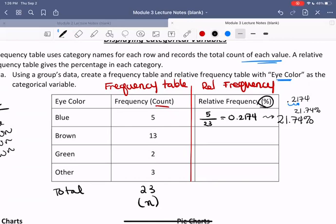All right, now let's compare together. So for brown eyes, we should be getting 56.52%. For green eyes, we're getting 8.7%. And other, we're getting 13.04%.